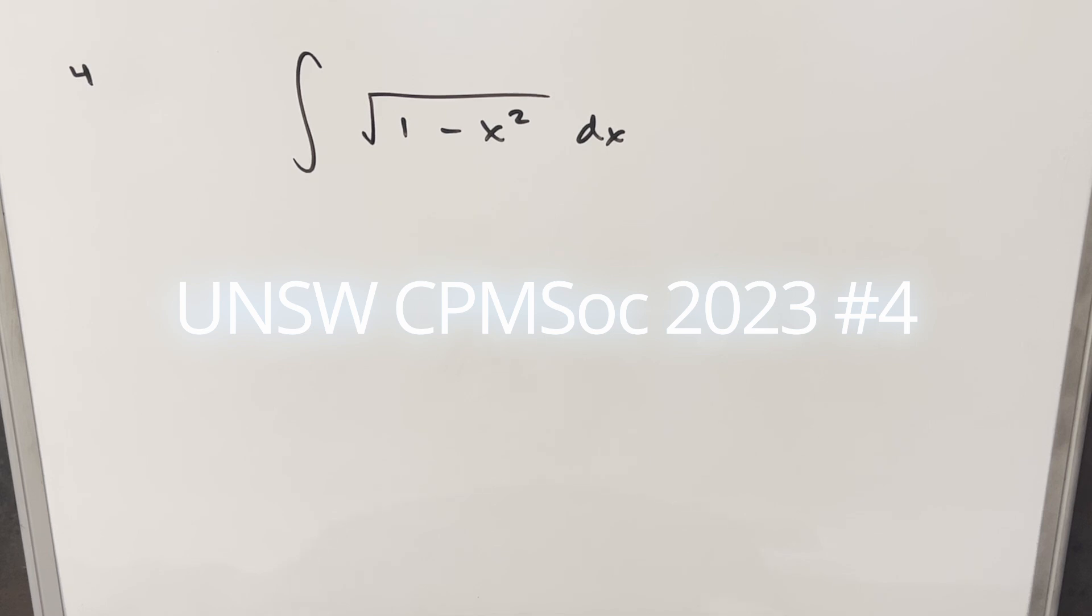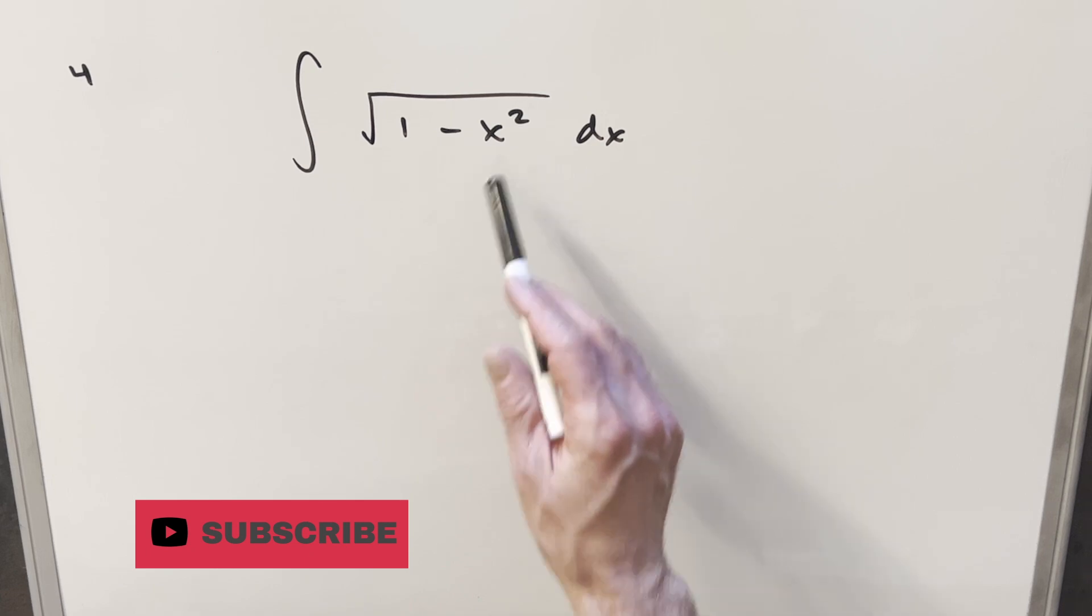We have the integral of the square root of 1 minus x squared dx. I think I'm actually just going to do the most straightforward thing on this and do a trig substitution. So in this form,